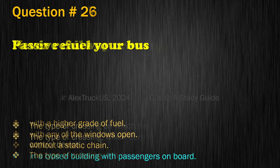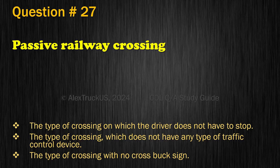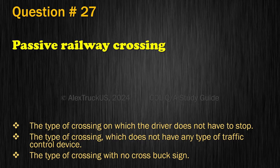Question 27. Passive railway crossing — which definition is correct? The type of crossing on which the driver does not have to stop; The type of crossing which does not have any type of traffic control device; or The type of crossing with no cross-buck sign. The correct answer is: The type of crossing which does not have any type of traffic control device.